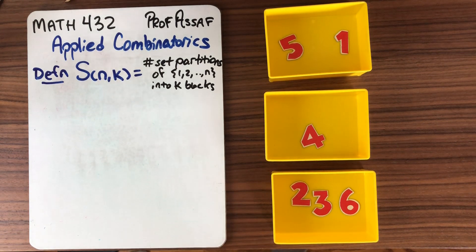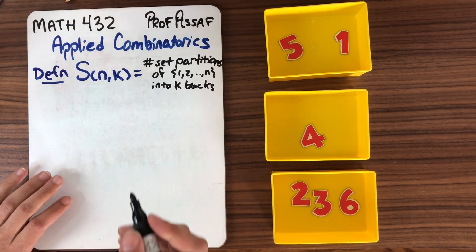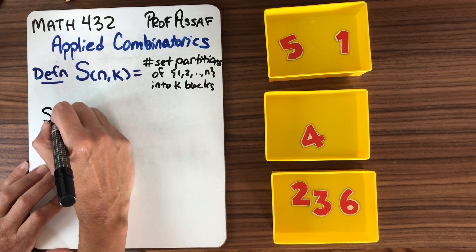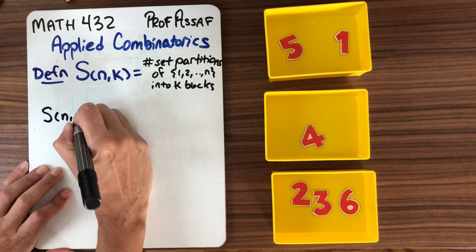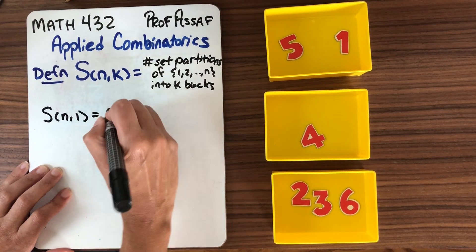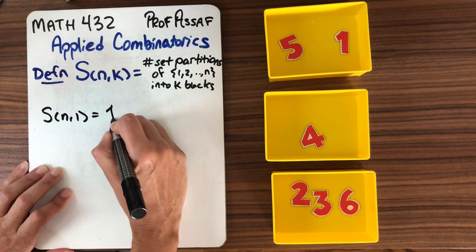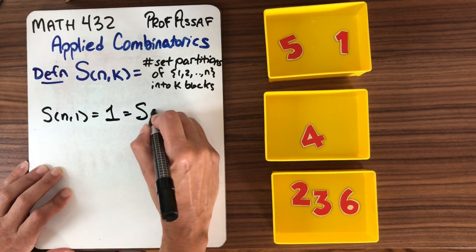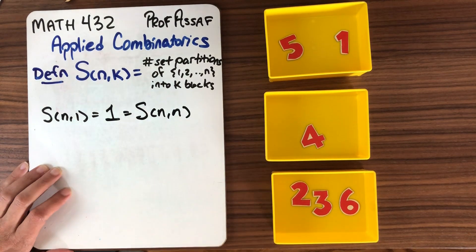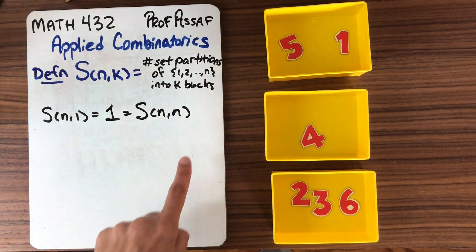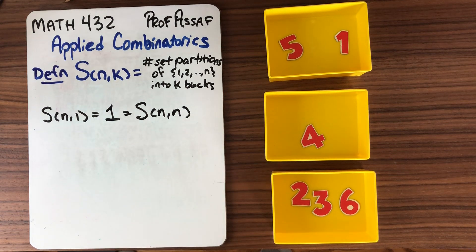We've seen some interesting examples of formulas for these. S(N,1) — that's if we put everything into one block — is 1. That's one way to do it. And of course, if we put it into N blocks, there's also one way to do it: either all the numbers in the same block, or each number in its own block. Still one way to do it.